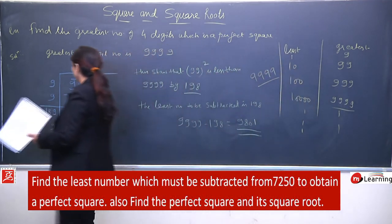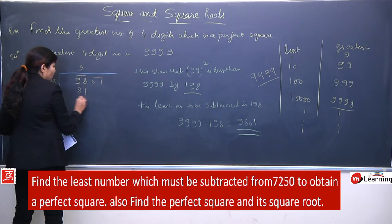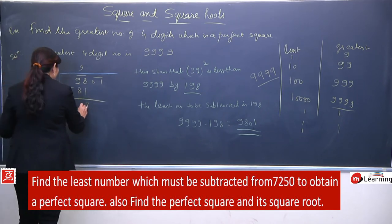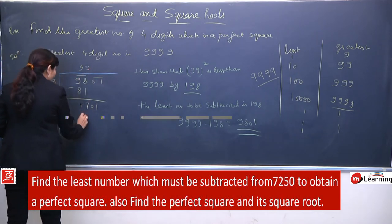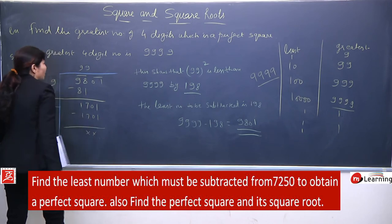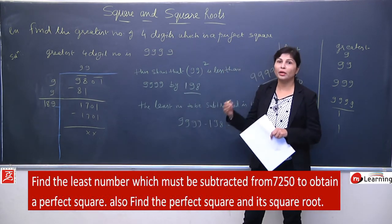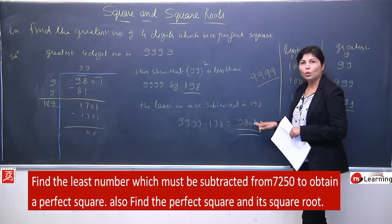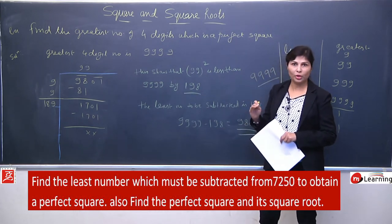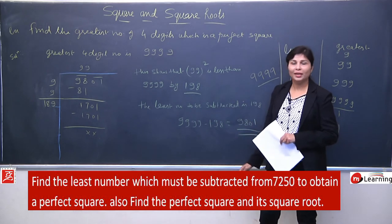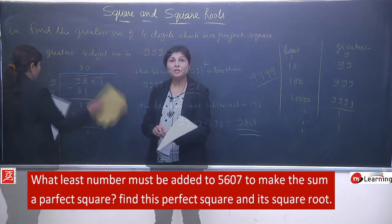So is type ke questions baar baar practice kariye — these are very very important questions. Now another very nice example: what least number must be added? Pehle wale example mein what least number must be subtracted tha, aur yahan what least number must be added — yahan par huge difference hai. Subtracted wala hota toh long division ke remainder ko actual number se subtract karte, aur woh perfect square milta.